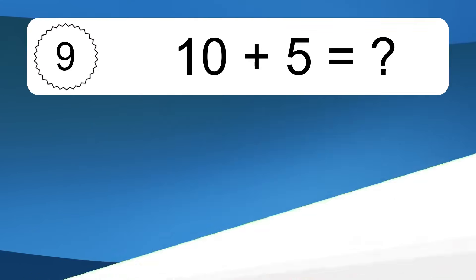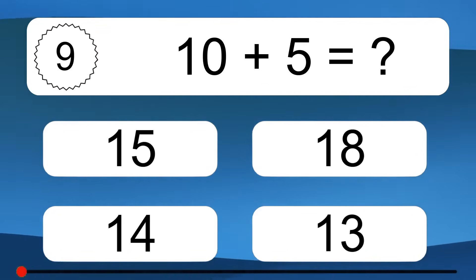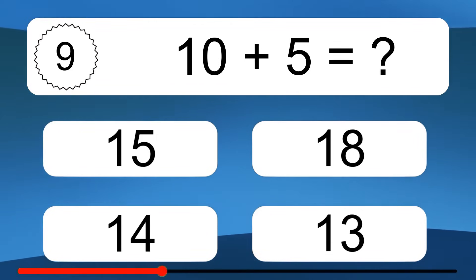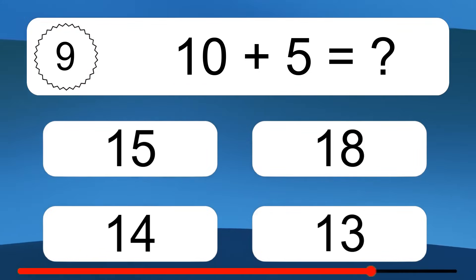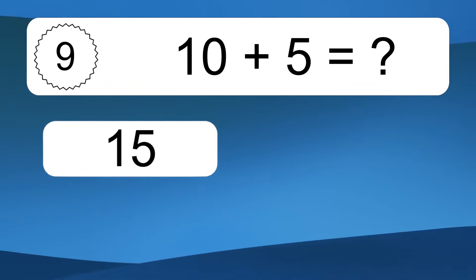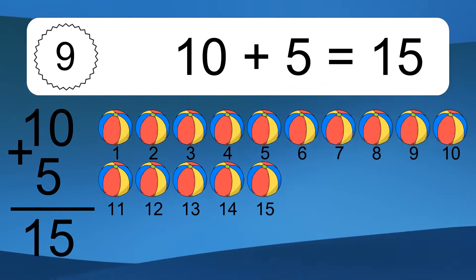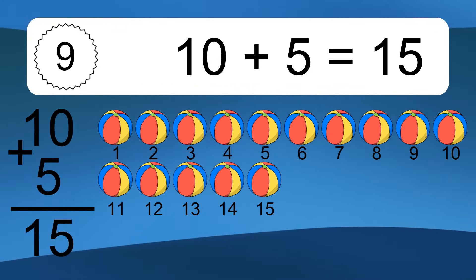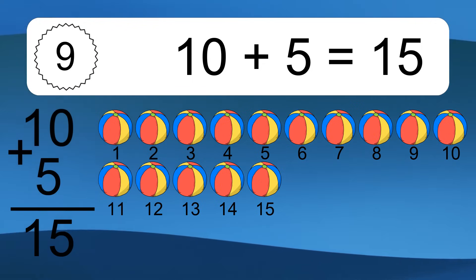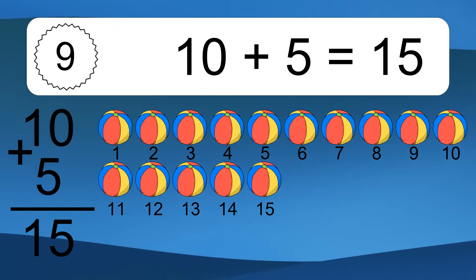10 plus 5 equals what? 10 plus 5 equals 15. Let's count it. 1, 2, 3, 4, 5, 6, 7, 8, 9, 10, 11, 12, 13, 14, 15.